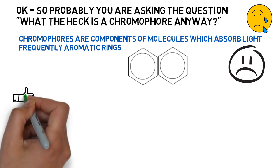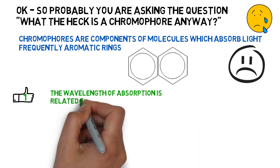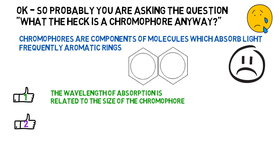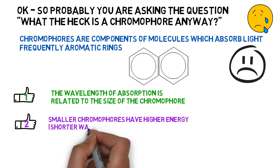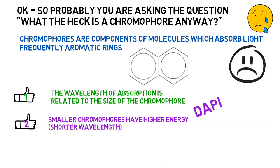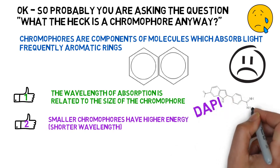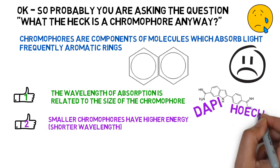First rule of thumb, the wavelength of absorption is related to the size of the chromophore. Second rule of thumb, small chromophores have high energy and therefore shorter wavelengths. Good example you all know would be DAPI or HERXT. These are both UV absorbers, so very low wavelength excitation. But they are also high energy emitters. Now you know why I drew these in violet.